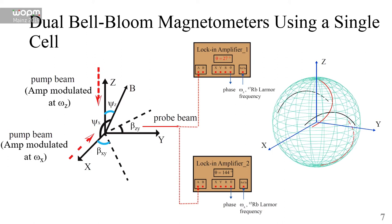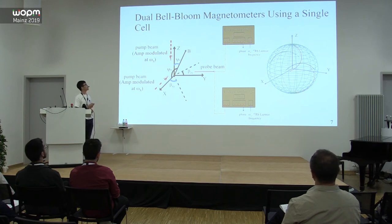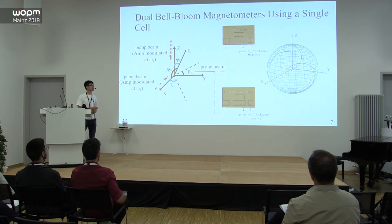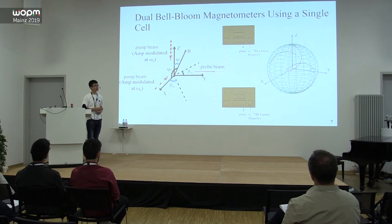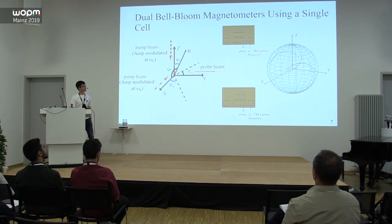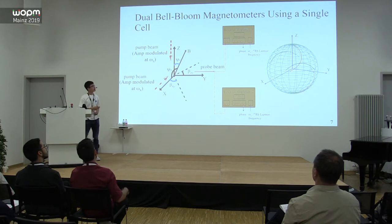To solve this problem, we filled the atom cell with rubidium-85 and rubidium-87 at the same time, so that we can modulate the two pump beams at the Larmor frequencies of rubidium-85 and rubidium-87 respectively. In this way, we can demodulate the probe beam at different frequencies using two lock-in amplifiers.